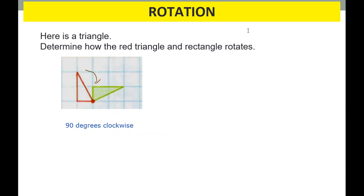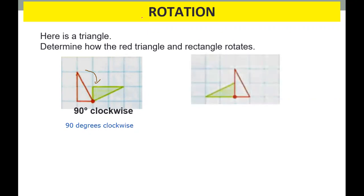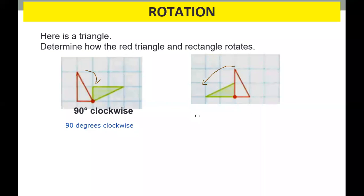Let's move to the next. 90 degrees clockwise. How about that one? It's starting from here and it went there. This is our original point, and it turns, it rotates this side. If this is clockwise, what will it be here? It will be only 90 degrees.